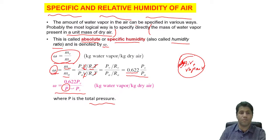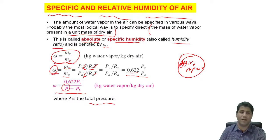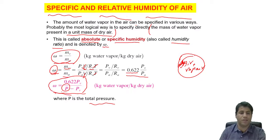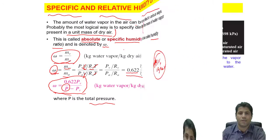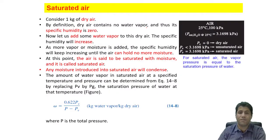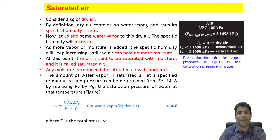This second equation — Ω = 0.622·Pv/(P − Pv) — is more common in calculations of specific humidity, and later we will see why. So this is the equation we use to calculate the absolute or specific humidity of atmospheric air.